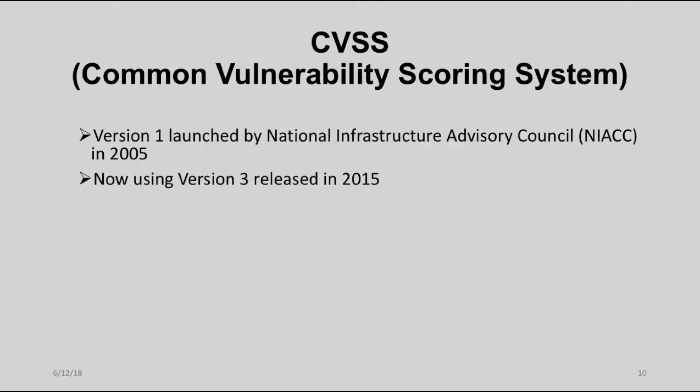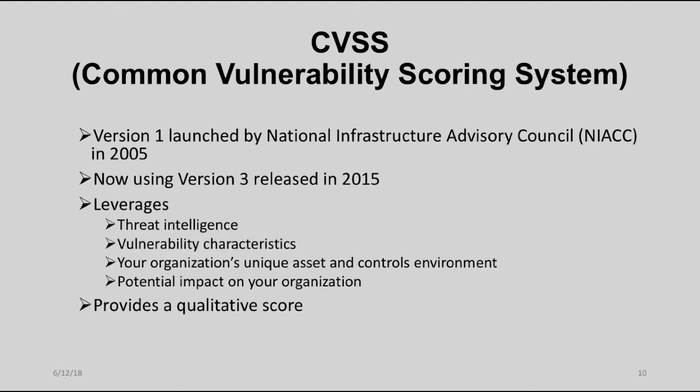The first version of the CVSS was released in 2005. We are now in version 3, but this continues to be a work in progress. The NIST CVSS calculator we step through in the following slides uses threat intelligence, vulnerability characteristics, the effect on threats of your controls framework, and the assets involved to provide a qualitative score for your organization. This score, while not perfect, is a good indicator for planning where and when to apply security resources for risk management.